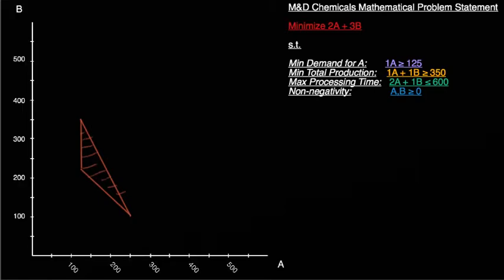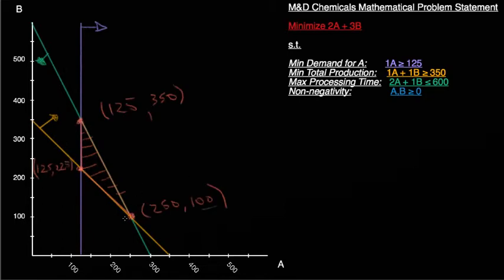So once I have my feasible region, the next step I want to undertake is determining the extreme points. You recall that the extreme points are essentially our potential solution values. So the extreme points are going to occur at the intersections, at the intersection of constraint lines or constraints that are bounding the feasible region. Well, in this simple problem, I have three constraint lines, and every line bounds this feasible region. So that tells me I'm going to have three extreme points. One, two, three. They're going to occur here, here, and here. And I can solve for the values of those extreme points.